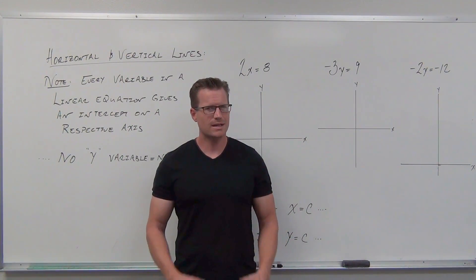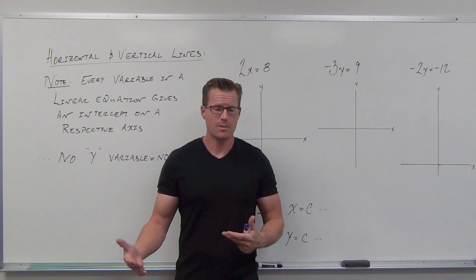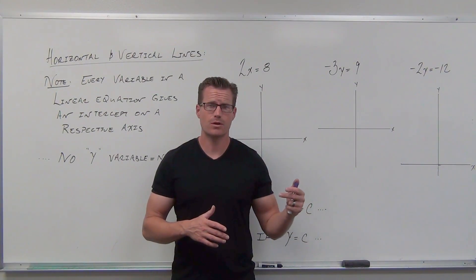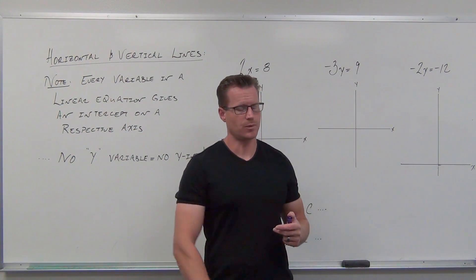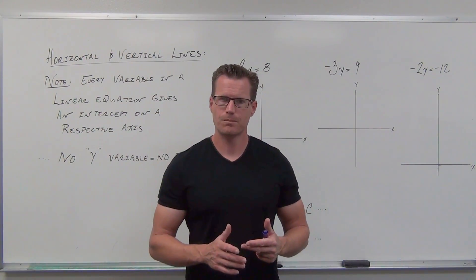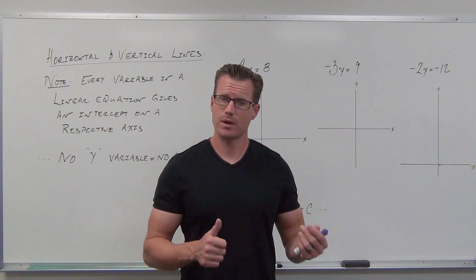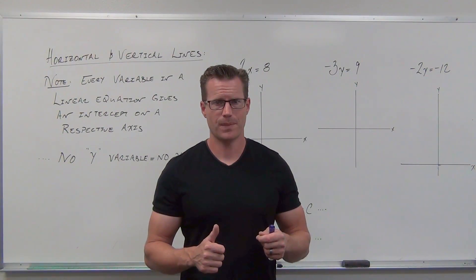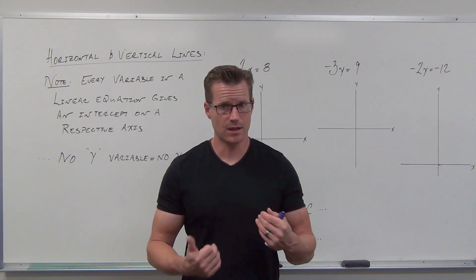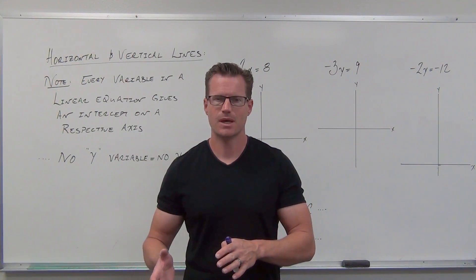Welcome back. We're going to take a little sidestep before we continue on into diagonal lines — these linear equations in two variables — and talk about vertical and horizontal lines. These are still linear equations, but they're in one variable, and that's interpreted, as far as graphing lines go, as vertical or horizontal lines.